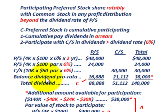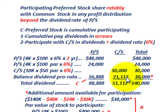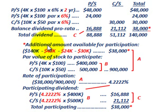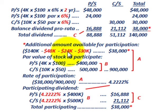We need to use this allocation for the cumulative participating amount. The balance of dividends will be distributed on a pro-rata basis: preferred stock gets $16,888 and common stock gets $21,112. The total remaining to allocate is $38,000 of the $140,000 total. That $38,000 is calculated as: $140,000 total minus $48,000 to preferred arrears, minus $24,000 current year preferred, minus $30,000 common stock — leaving $38,000 as the additional amount available for participation.